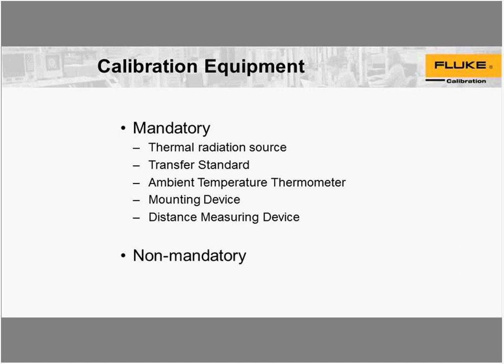What we need for calibration — there's some equipment that's mandatory, and we'll talk about that in the following slides. Some of the mandatory equipment includes a thermal radiation source, a transfer standard, a thermometer, a mounting device, and a distance measuring device. There is also non-mandatory equipment.